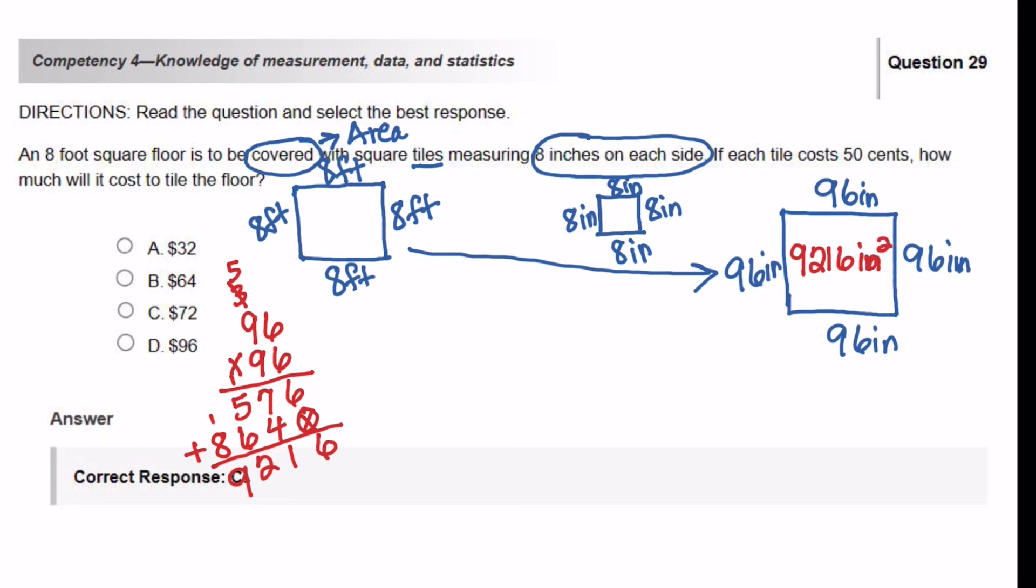So now you need to figure out, well, how many tiles can I fit in that particular space? So you have to now find the area of one tile. So the area of one tile is going to be 8 times 8, and in this case it'll be 64 square inches. So how many 64 square inches can you get out of 9,216 square inches? So let's do our division.